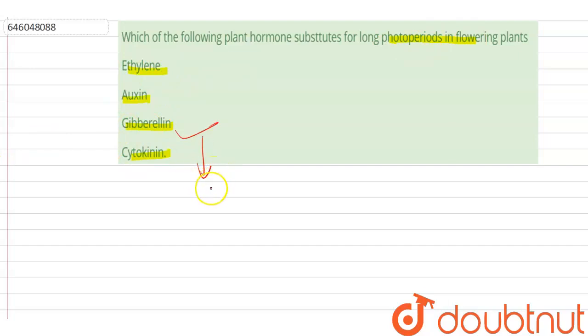Gibberellin affects several reproductive processes in plants. They stimulate flowering or promote flowering in plants, particularly in long day plants. Long day plants require long periods of light.